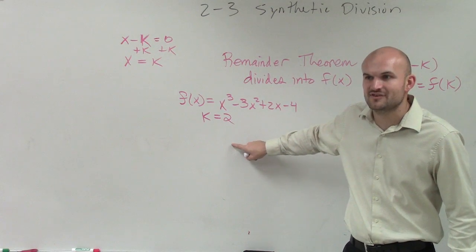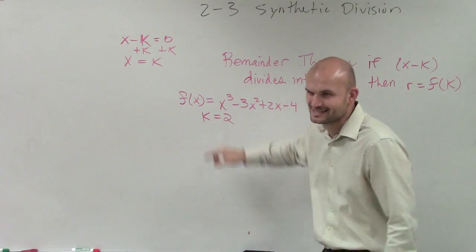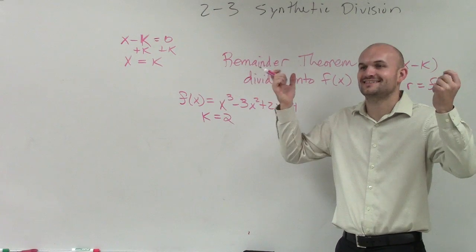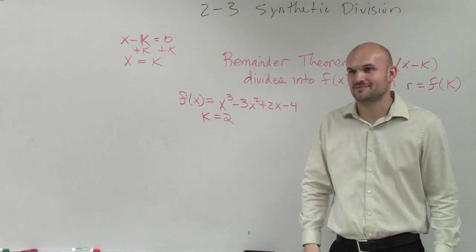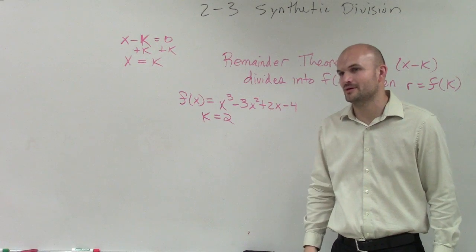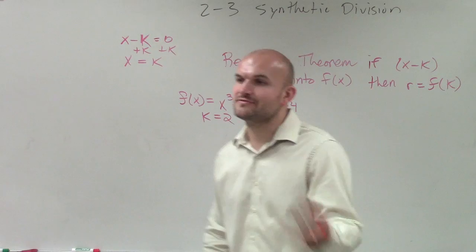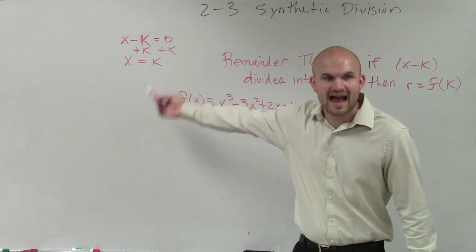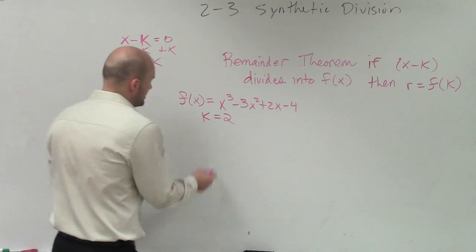I'm going to do synthetic division, and when I do synthetic division, I need to see something to show that this is going to be a zero. The remainder is going to be zero, right? Because if the remainder is zero, that means this zeros factor evenly divides into the polynomial. All right, so let's go and do it.